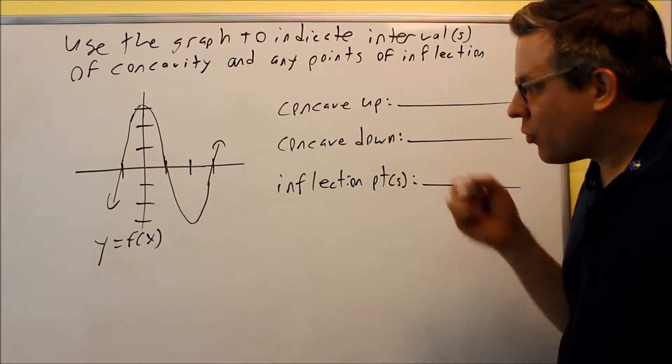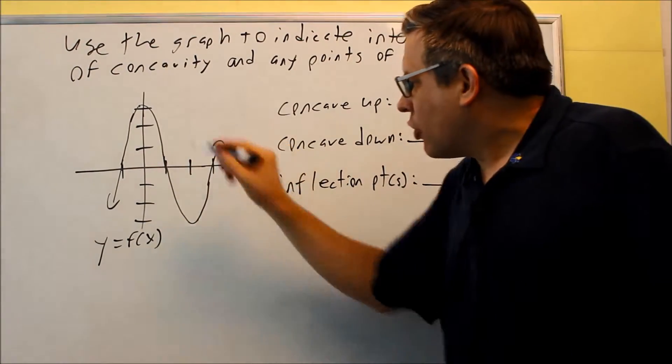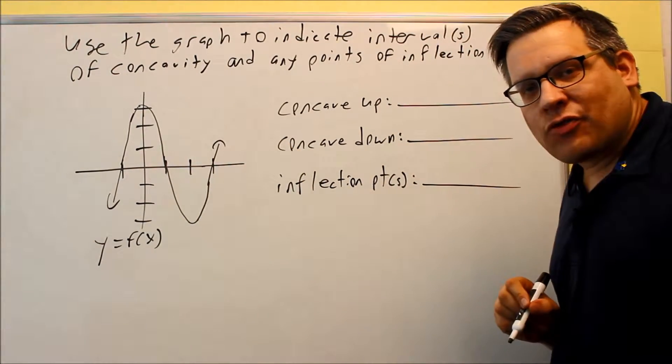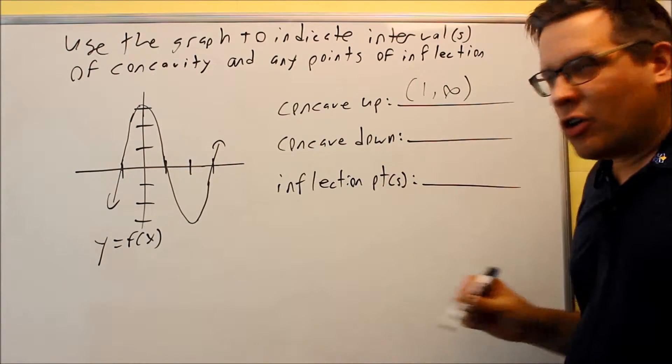So concave up, just from reading it from the graph, we're going to write this in interval notation where you're going to indicate the x values for which the graph is opening up and that would be from 1 to infinity.